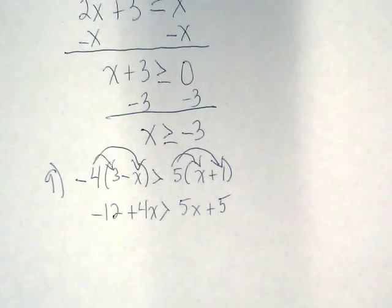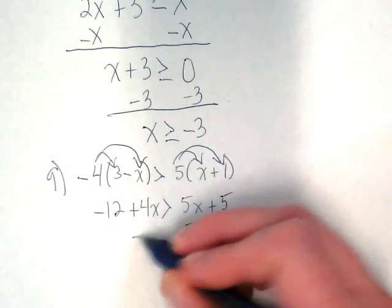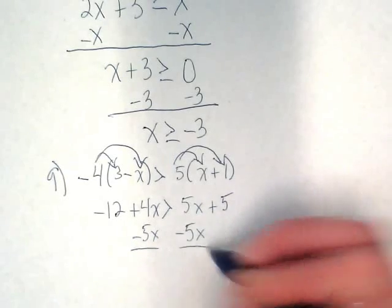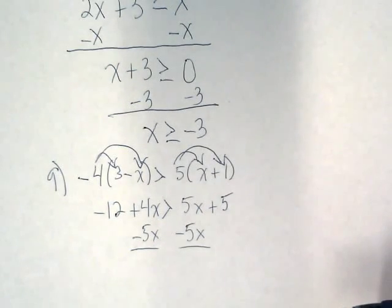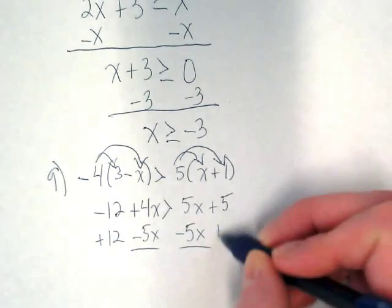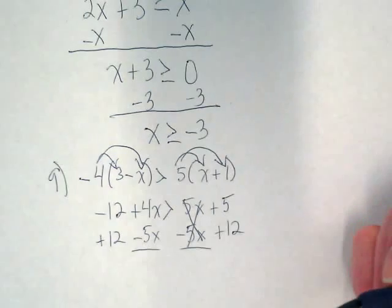I'm going to move the 5x to the left even though it's going to give me a negative x. I know I want my variable on the left side. That means I'm going to move my 12 to the right and to verify that I've cleared the variable from this side I'm going to cross that out to show it's equaling 0.